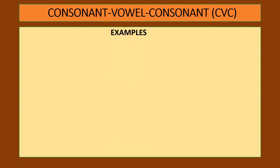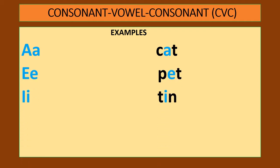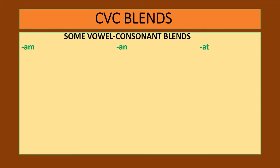Here are examples of CVC words: for 'a' we have cat, pet, bit, and ban. Some of the blends include: at, ed, at, it, in, and ip.